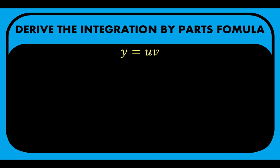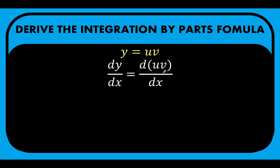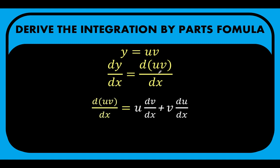Then let's get the derivative of both sides. So we have dy/dx equal to d(u·v)/dx. On the right side, we need to find the derivative of the product of two functions u and v. To do that, we apply the product rule of differentiation: the first function times the derivative of the second function, plus the second function v times the derivative of the first function u.